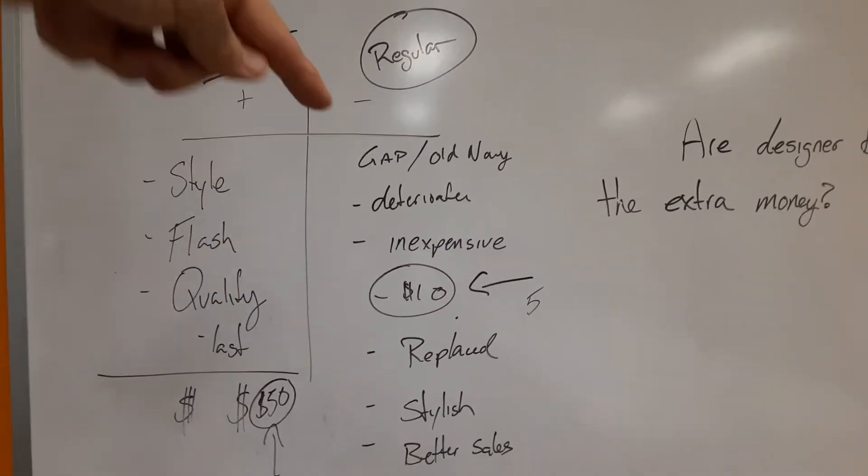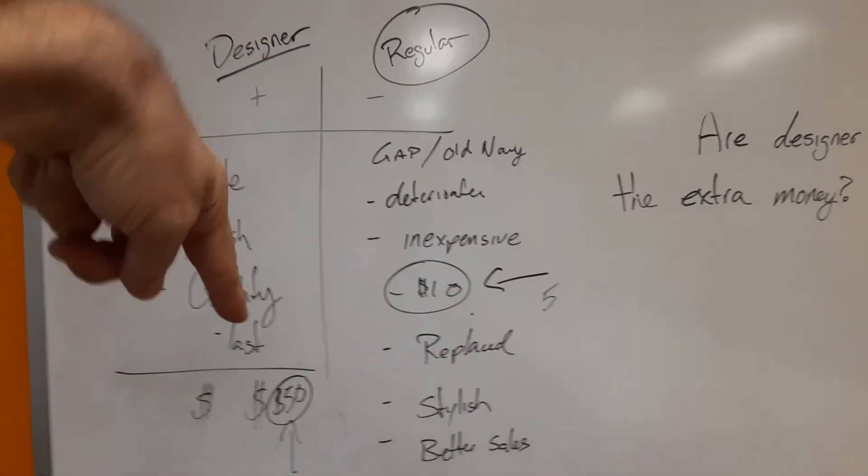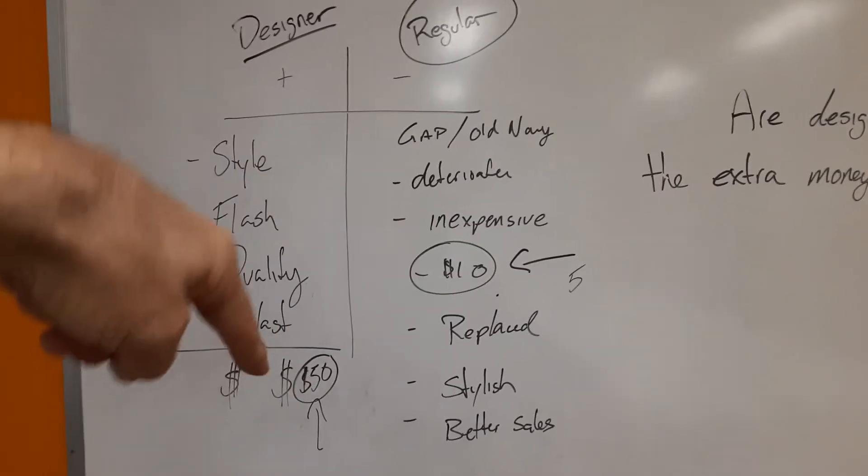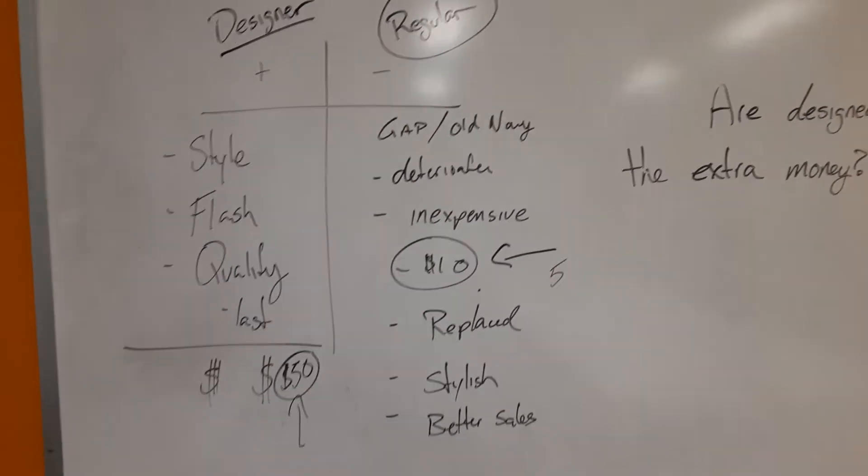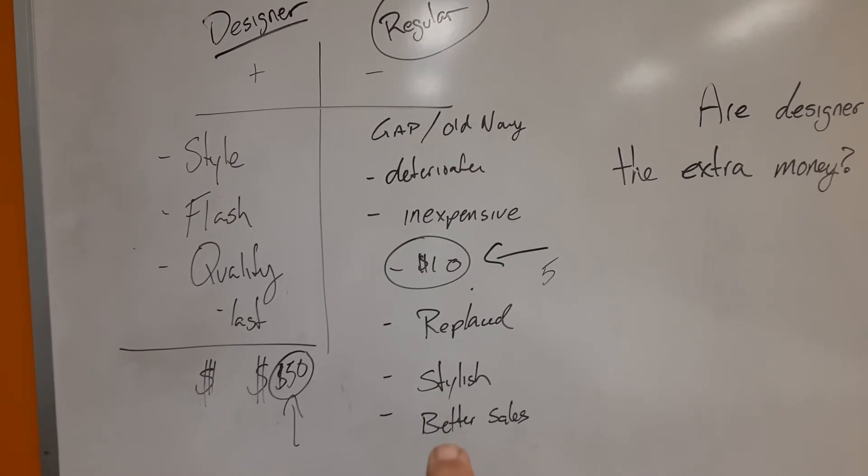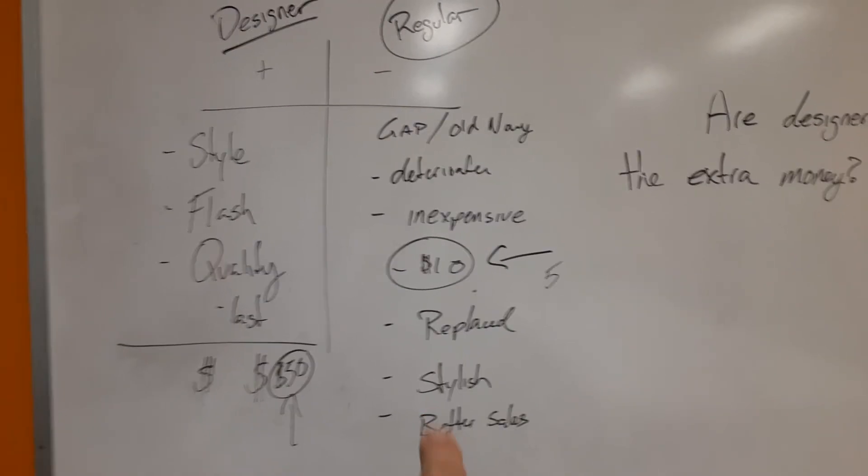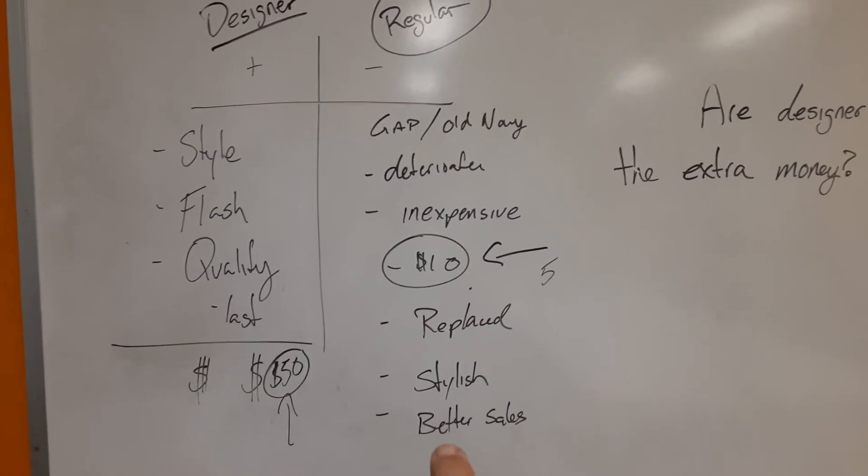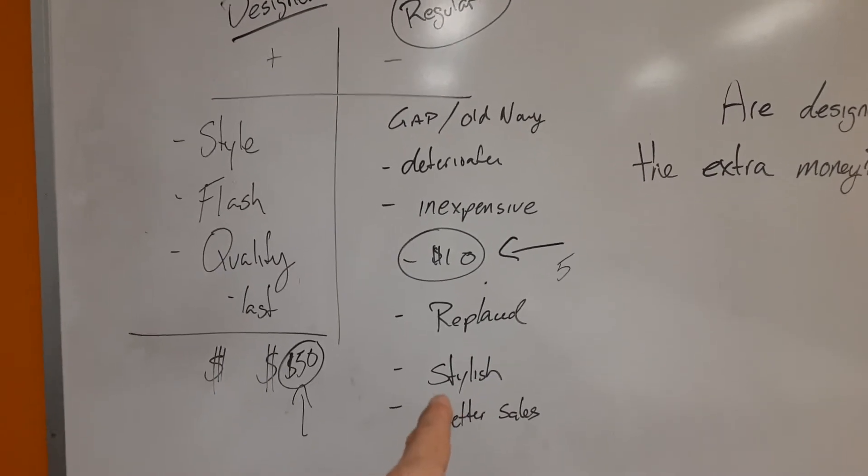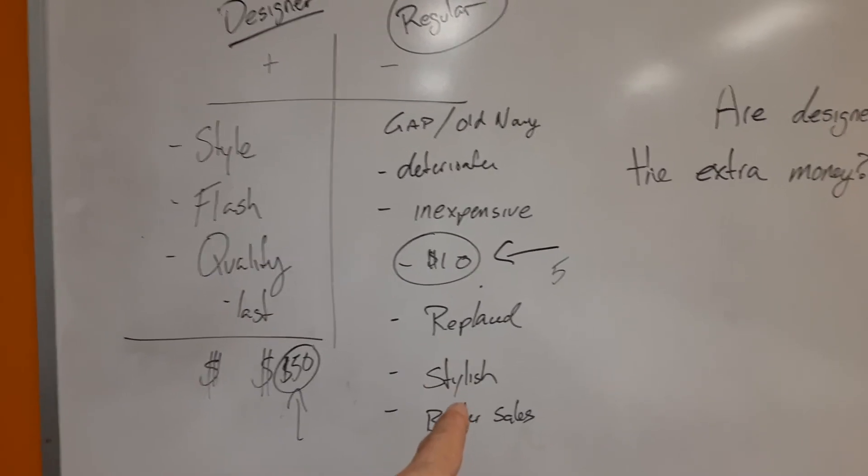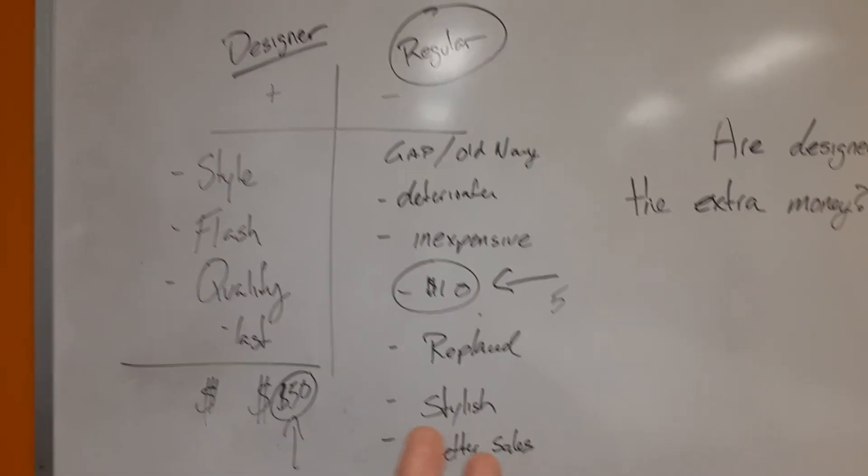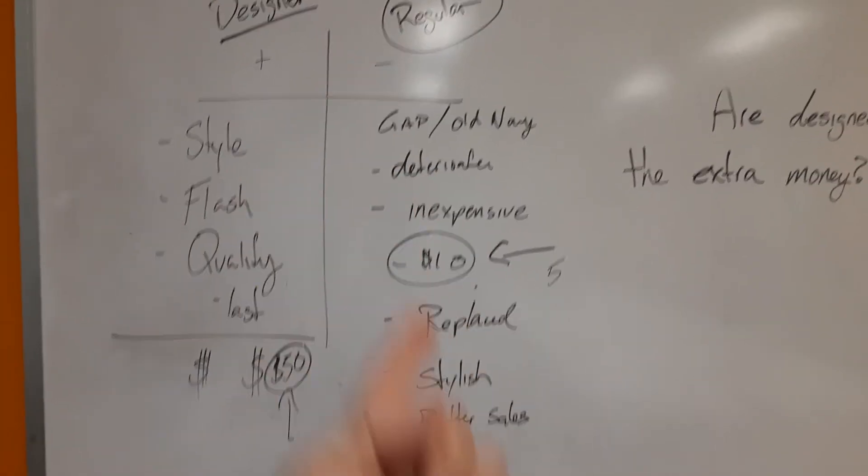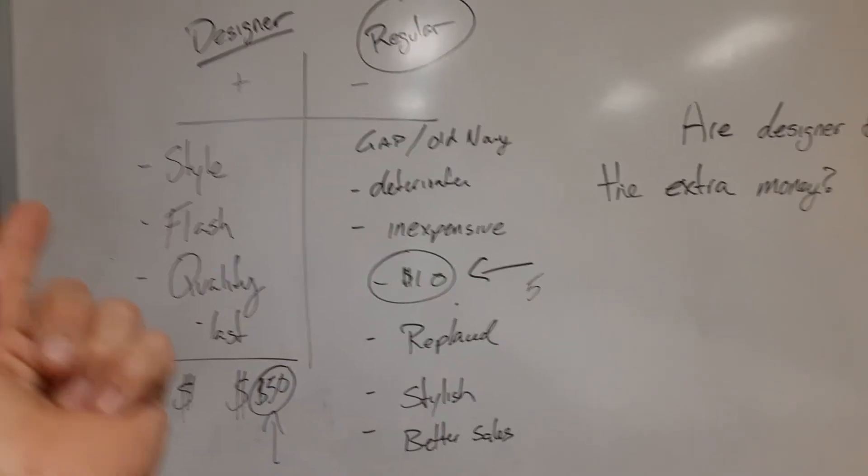Now, what do regular clothes do? They deteriorate. That's the difference here. They're inexpensive. They're expensive. These have better sales and guess what? They could be stylish. Certain regular brands can also have style.